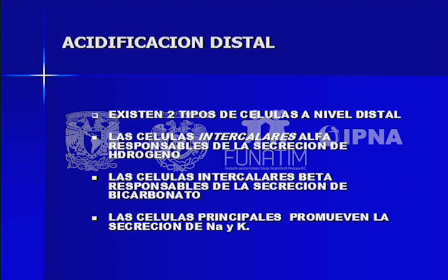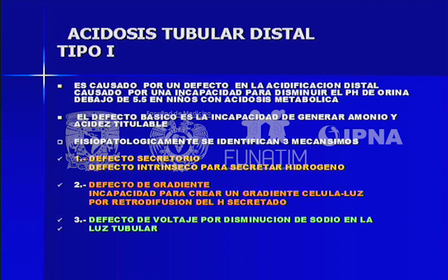La acidificación distal tiene tres mecanismos: la reabsorción del bicarbonato que escapó al túbulo proximal (el 10%), la titulación del fosfato dibásico y la transformación del amoníaco en amonio. A nivel distal existen dos tipos de células: las células intercalares alfa, responsables de la secreción de hidrógeno; las beta, responsables de la secreción de bicarbonato; y las células principales que promueven la secreción de sodio y potasio. La acidosis tubular distal se produce por incapacidad para disminuir el pH de orina por debajo de 5.5 en niños con acidosis metabólica: puede ser un defecto secretorio, de gradiente o de voltaje.